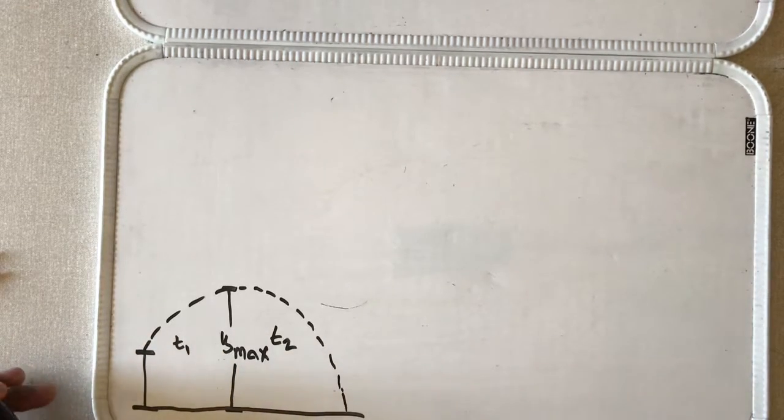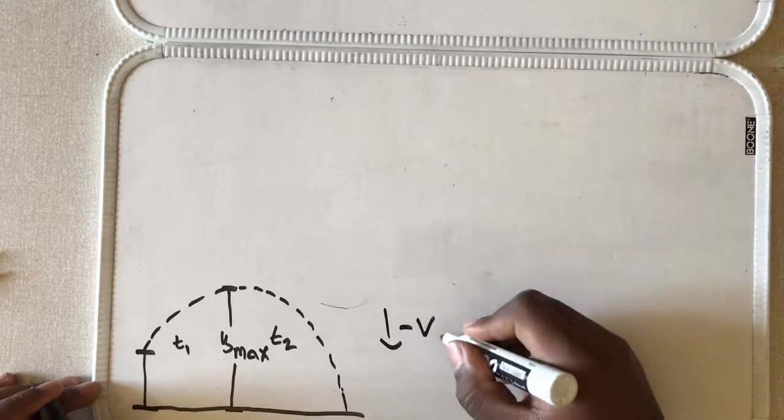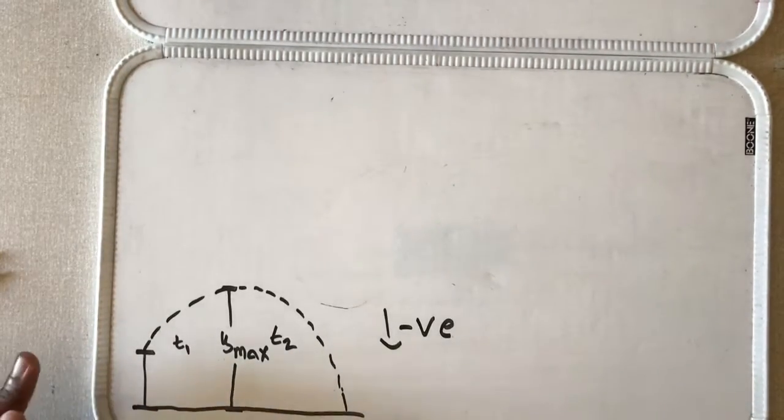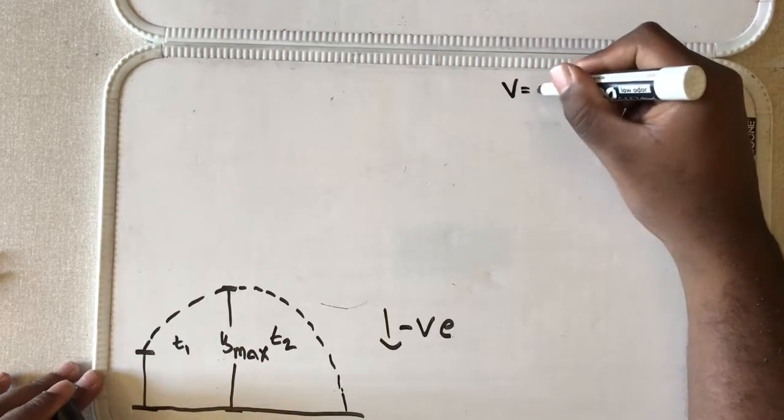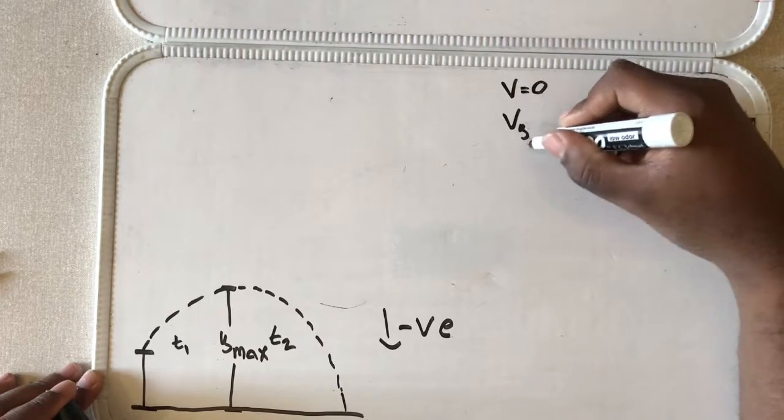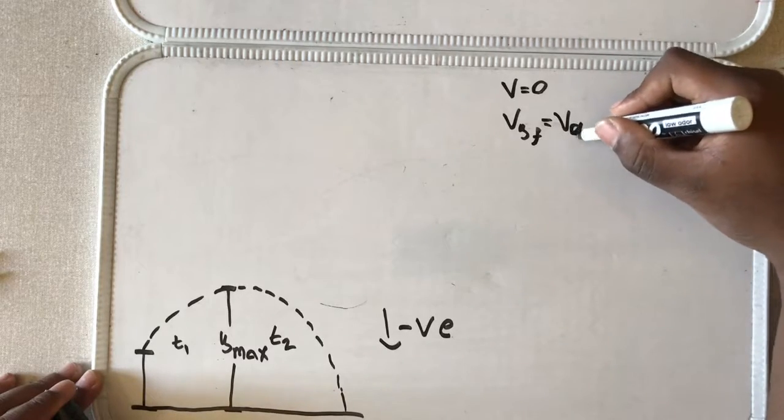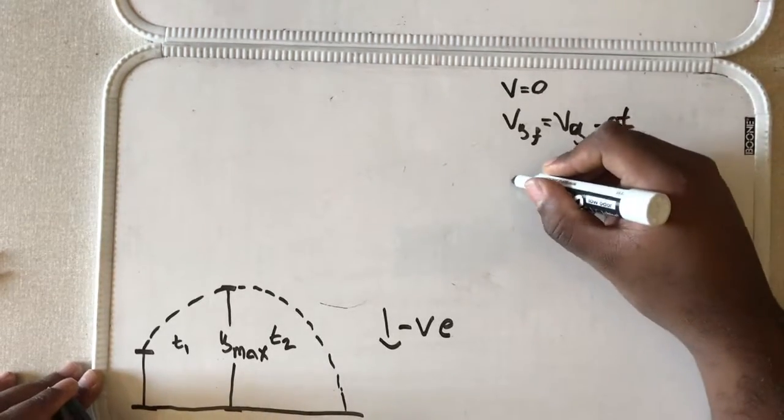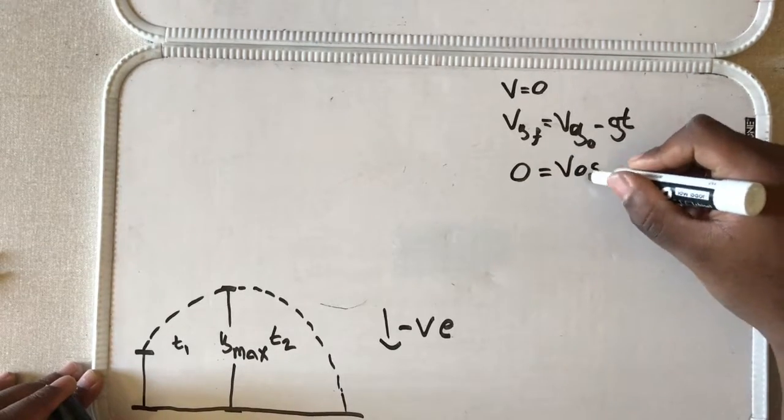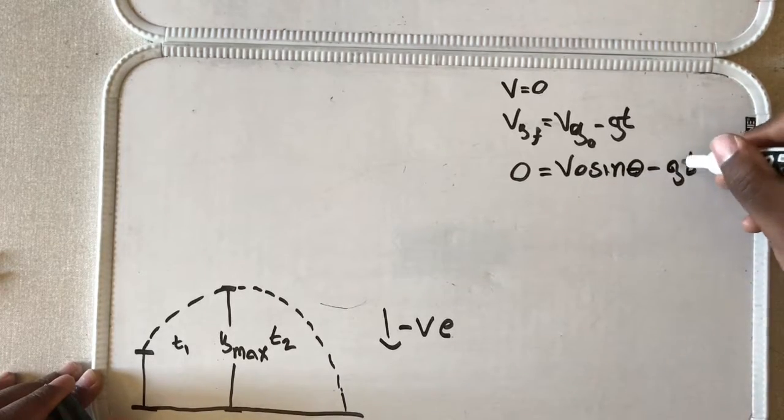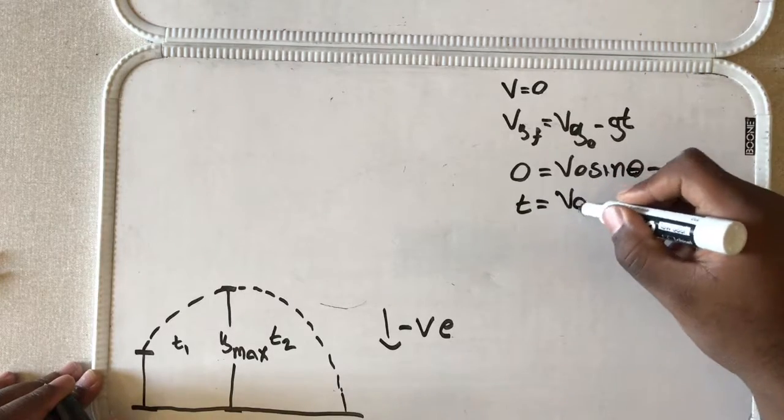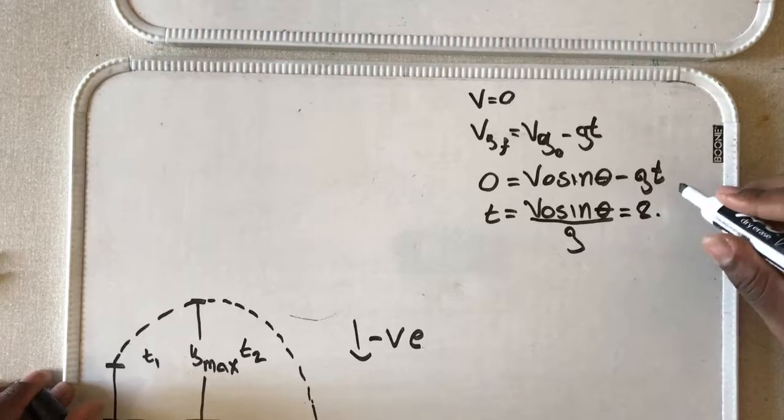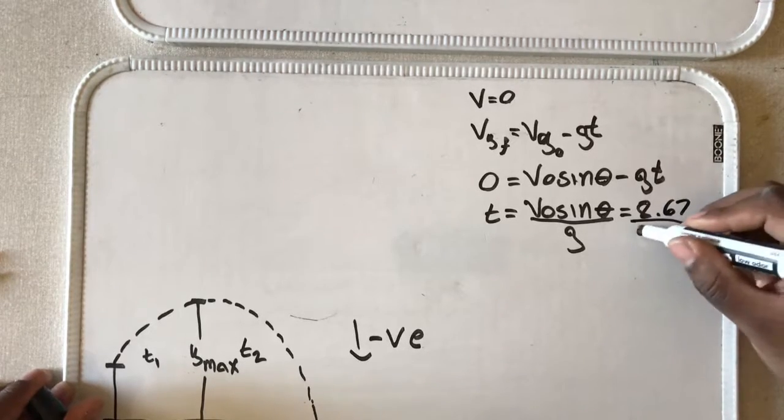And we can find the time it takes to get to its maximum height. Actually, I'll also set my vectors. Down is negative, up is positive. So I know an object, when it reaches its maximum height, its velocity is zero. So I can use this equation to help me out. V = V_0 - gt. I know the final velocity is zero and I can find the initial velocity. This is simply V_0 sin(θ) - gt, so t is V_0 sin(θ) divided by g, and V_0 sin(θ) is 8.67 divided by 9.81,